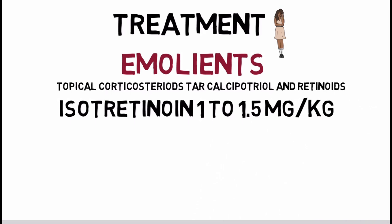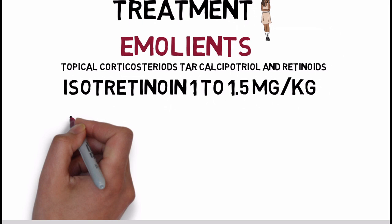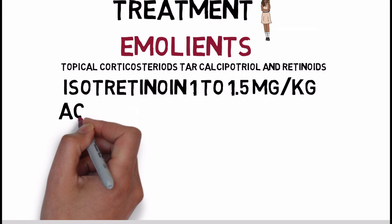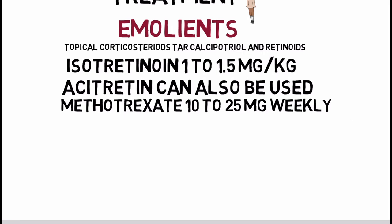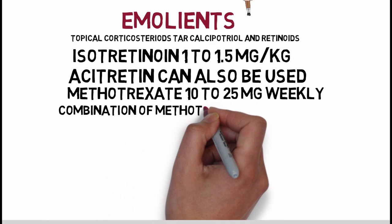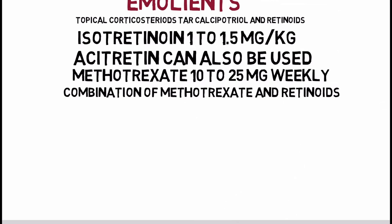Systemic retinoids have received considerable attention. Isotretinoin at a dose of 1 to 1.5 mg/kg can induce significant clearing within 3 to 6 months; higher doses up to 2 mg/kg are occasionally required. Acitretin is also beneficial. Methotrexate is another treatment option — weekly oral or subcutaneous doses of 10 to 25 mg are usually administered, with responses seen within 3 to 6 months. In severe cases, a combination of methotrexate and systemic retinoids has been utilized, but an increased risk of hepatotoxicity must be kept in mind.